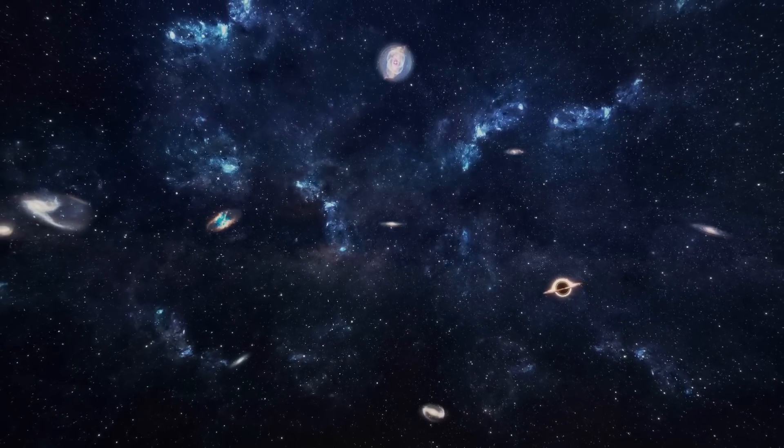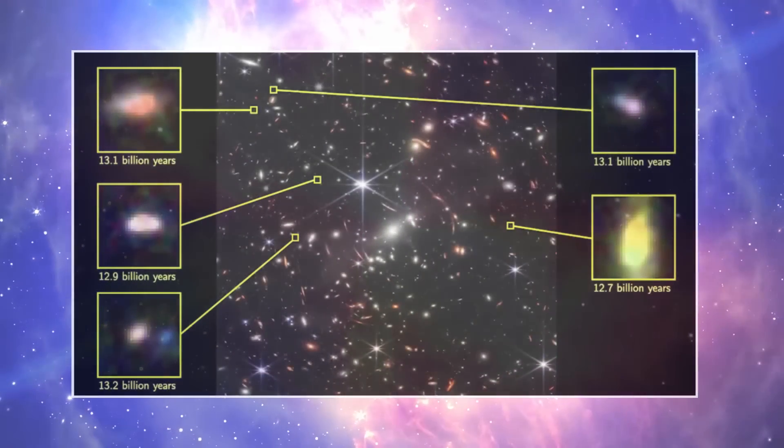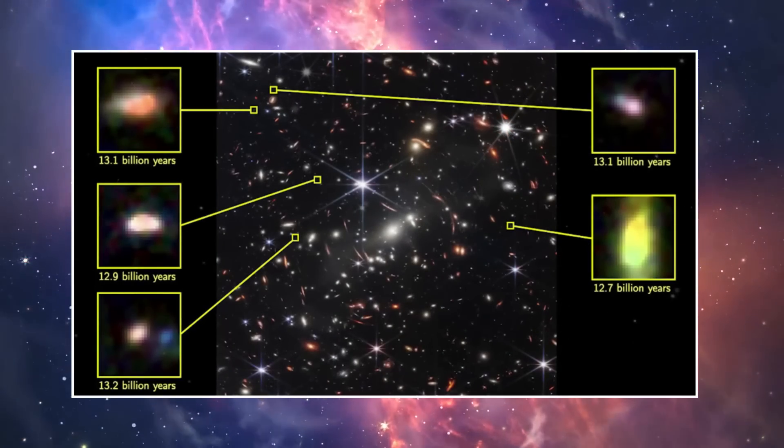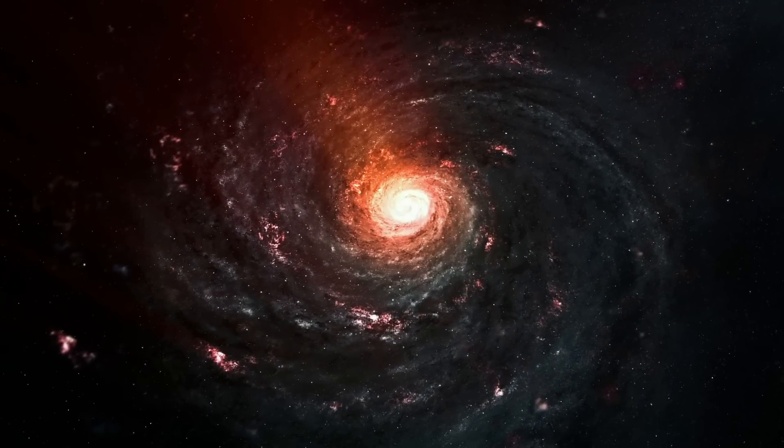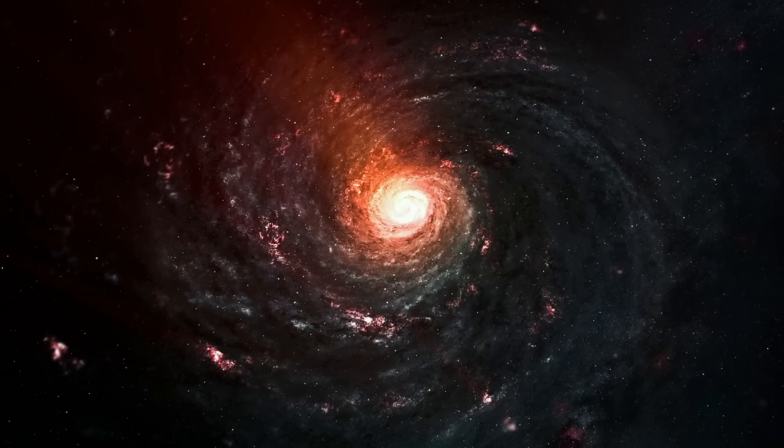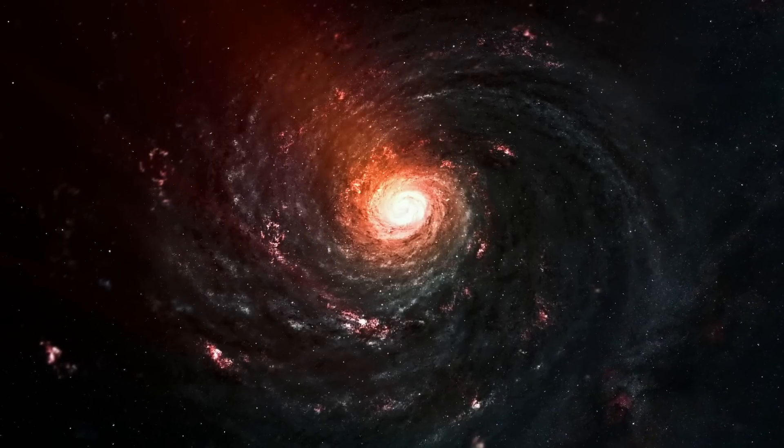Astronomers are now convinced that the light from these galaxies has traveled to Earth for over 13.4 billion years. Thus, these galaxies were already present when the universe was less than 350 million years old. This is what has become a scientific problem.